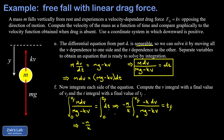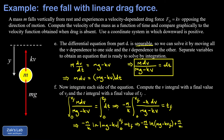The antiderivative on the left is the natural log of the denominator. We don't need absolute value bars because mg is always bigger than kv — the argument is always positive. Evaluating from 0 to v_final gives negative m over k times the natural log of mg minus kv_final, and for the lower limit we subtract negative m over k times the natural log of mg, giving a plus sign. The right-hand side is t_final.